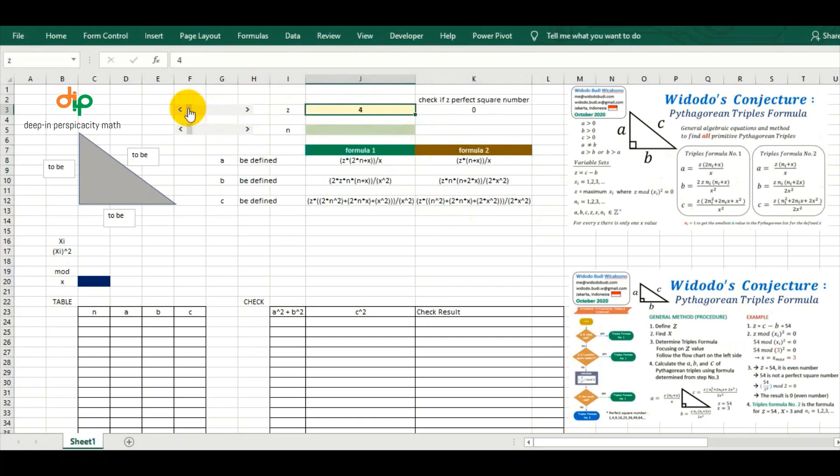It is starting from 1, and the lower scroll bar is used to change N value linked to the cell J5. It's also starting from 1. Cell K3 is to check whether Z value is a perfect square number or not. Text box A, B, and C are referred to the cell H8, H10, and H12, which are named A, B, and Hypotenuse.